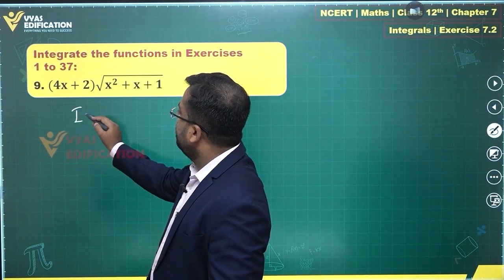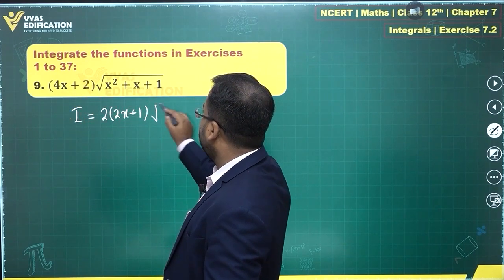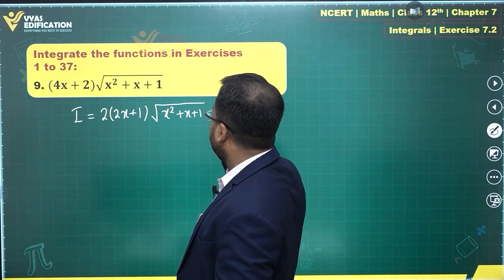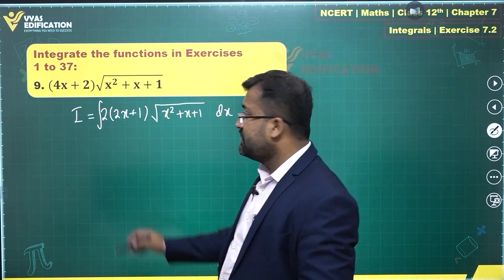Now, this is 2 times 2x plus 1 under root of x square plus x plus 1 dx. This is what you have. And now, we'll use the substitution.